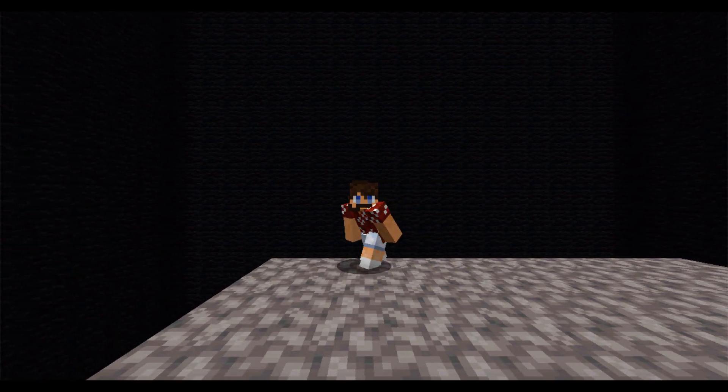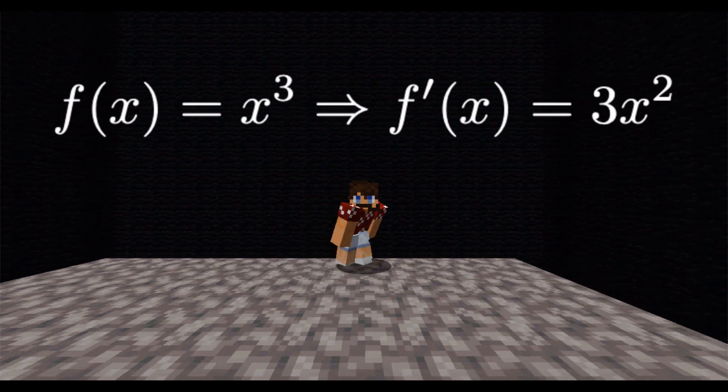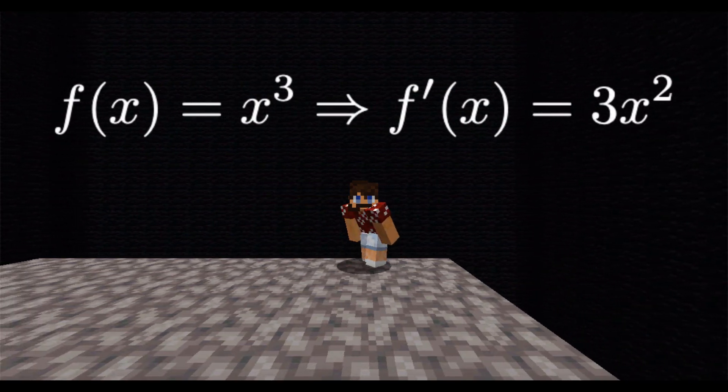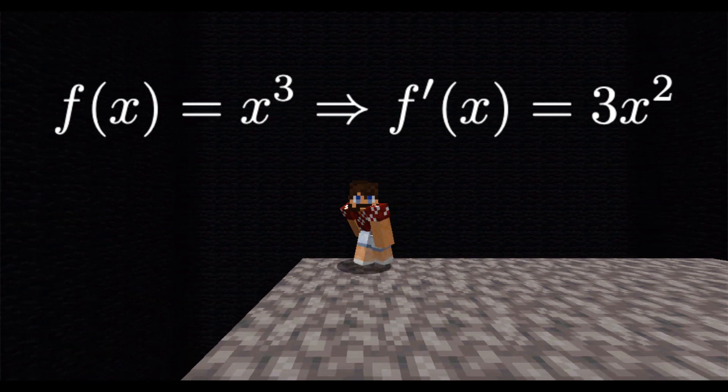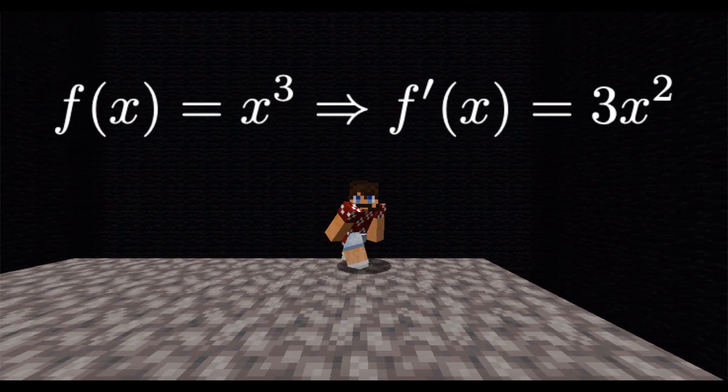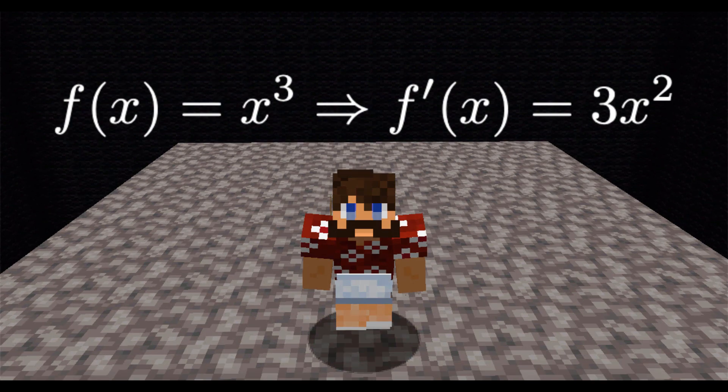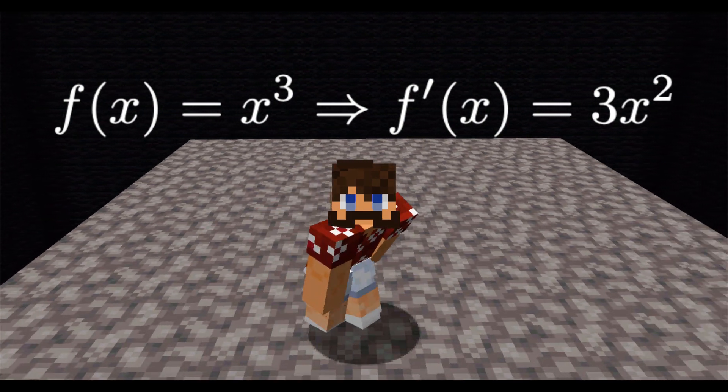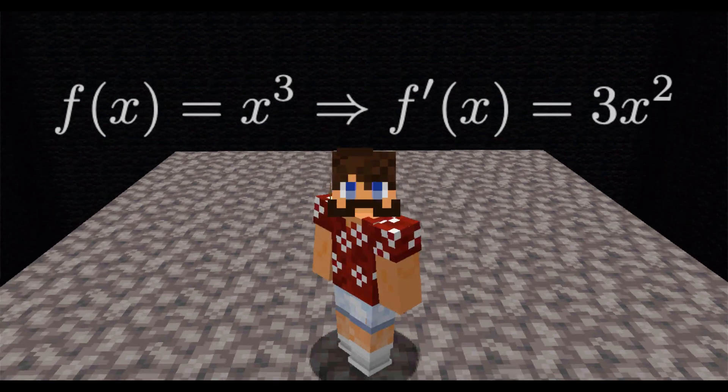One of the first things you'll show in your calculus class is that the derivative of the function f of x equals x to the third is f prime of x equals 3x squared. You bring the power down in front, and you drop one from the power. I'm going to show you how to visualize this in Minecraft using geometry and the limit definition of the derivative. No tangent lines.